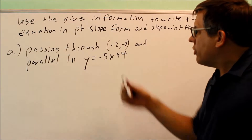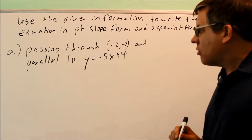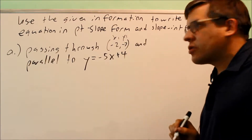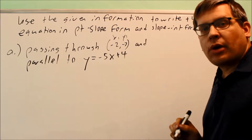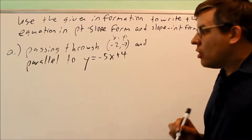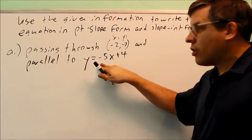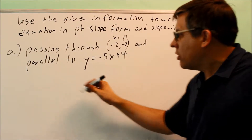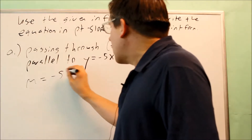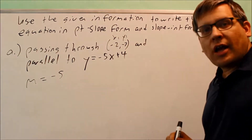First we want to use the point-slope form. We have x1 and y1 already given, but we need to find the slope m. Because we want the line to be parallel to the given one, the m we're going to use must be negative 5 — the same slope as the original line.